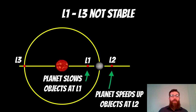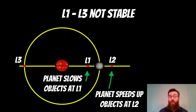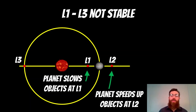The L1, L2, and L3 points are typically not stable, so if an object moves off that particular location, it quite quickly moves away. The L1 point has to orbit slower than it would normally, so the planet has to slow it down. And an object at L2 needs to speed up so that it orbits with the same velocity as the planet.